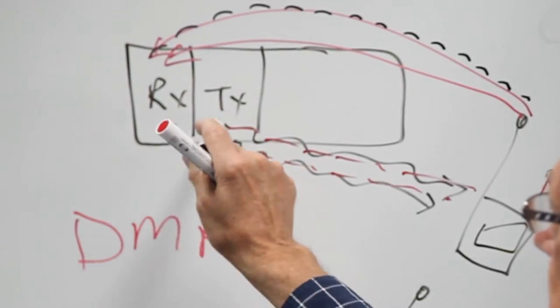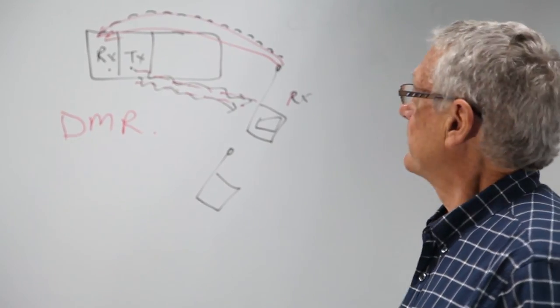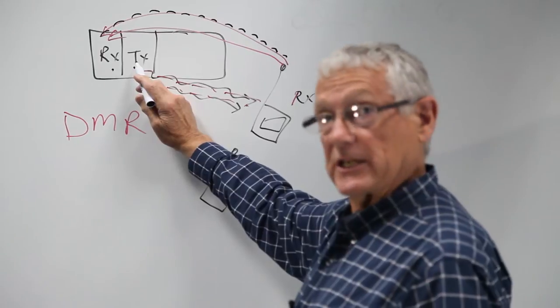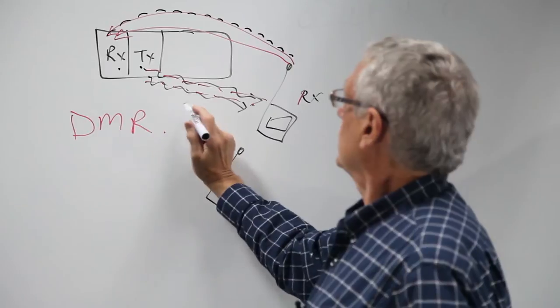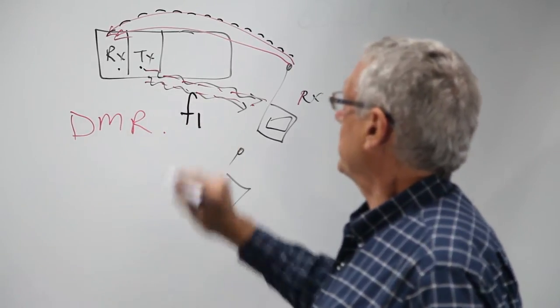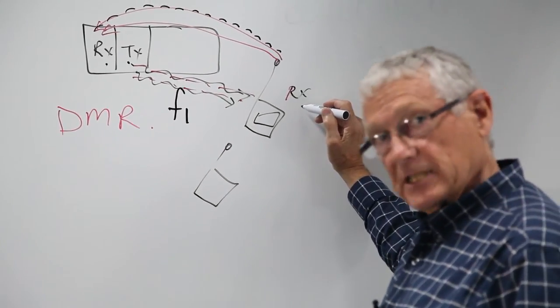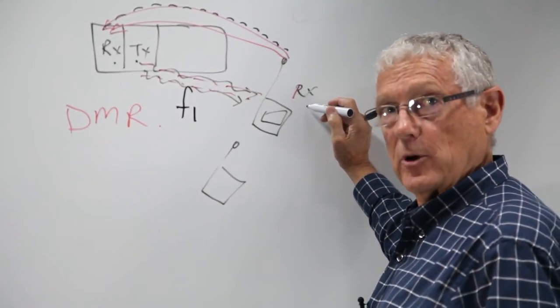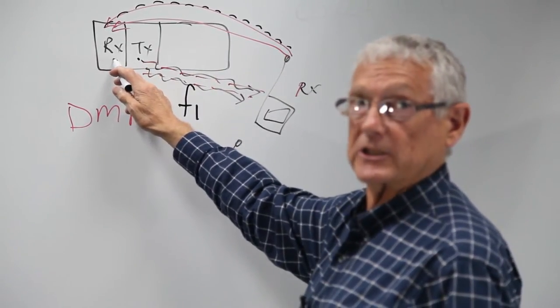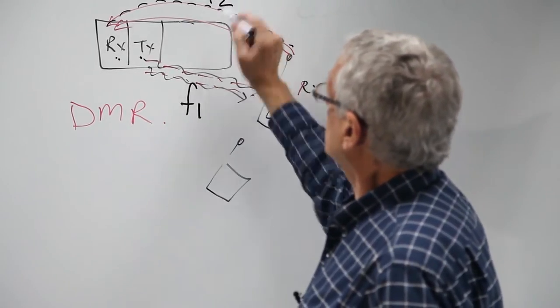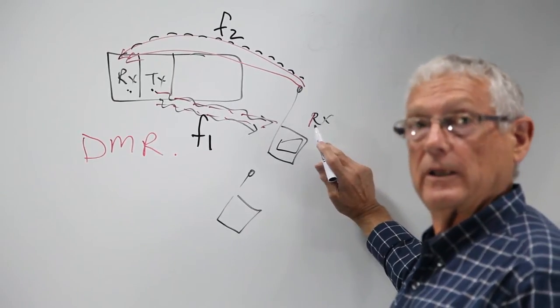The physical channel is the hardware; the logical channels are the time slots. In a DMR system, the transmitter at the base station transmits on a certain frequency - we'll call that frequency one. The transmitter is frequency one, which is the same frequency for receive on a portable or mobile. At the base station, the receiver works on a second frequency, which we'll call frequency two. That is the frequency transmitted from the mobile and the portables.